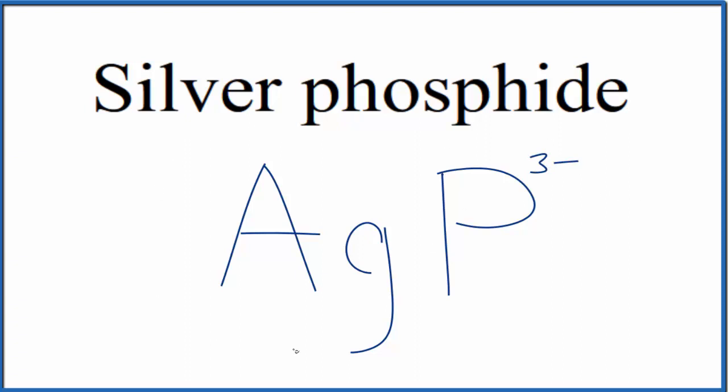Silver is a transition metal, but it's almost always one plus. Since this is a neutral compound (it doesn't say ion after it), these charges need to add up to zero, giving us a net charge of zero. If we had three of these silver ions here, three times one plus would be three plus - that would balance out the three minus.